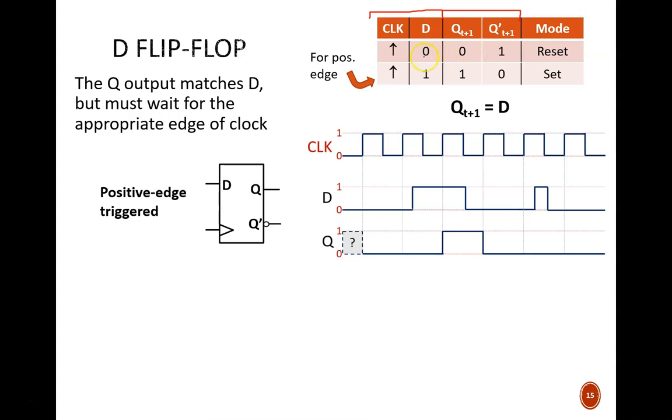As for those instructions, when D equals 0, the flip-flop is in reset mode, which means that Q will equal 0. When D equals 1, the flip-flop is in set mode, which means that Q will equal 1. This behavior is summarized succinctly in the characteristic equation written here, which says that the next Q output will equal the current D input.